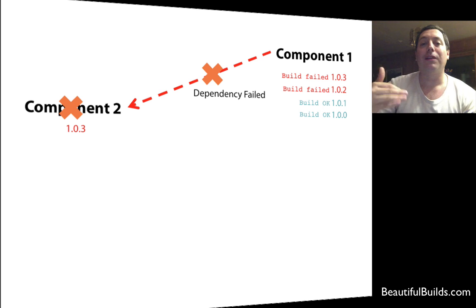So we cannot integrate these two components until their versions are exactly the same. And when I say versions, I mean that the source control tag, the source control version, the specific check-in version, is the same. If the source is different, then those builds will fail, and component two can never succeed until component one succeeds.